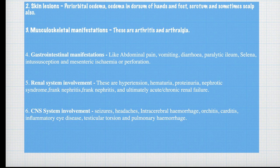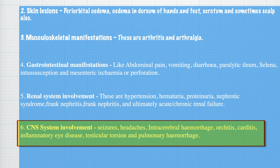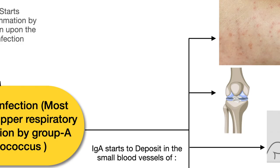CNS system involvement includes seizures, headaches, and intracerebral hemorrhage. Other manifestations include orchitis, carditis, inflammatory eye disease, testicular torsion, and pulmonary hemorrhage. Now we come to the pathophysiology of Henoch-Schönlein purpura.